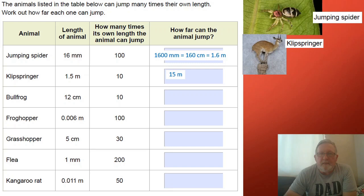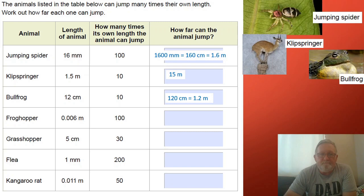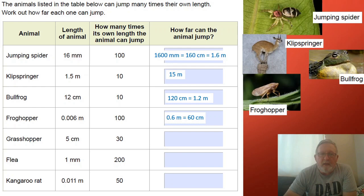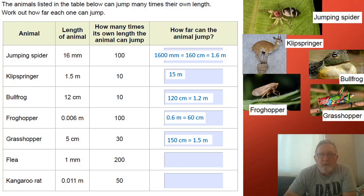Do you know what a klipspringer is? That's an antelope that lives in Africa. It is approximately 1.5 meters in size and it can jump up to 10 times its body length, 15 meters. The bullfrog can jump 10 times its body length. 120 centimeters is 1.2 meters. A frog hopper is actually a little insect and it can jump 100 times its body length. So if it's only 0.006 of a meter, 100 times that is 0.6 of a meter or 60 centimeters.